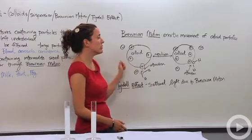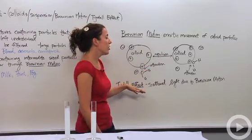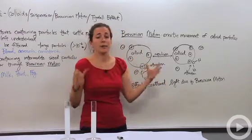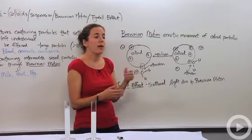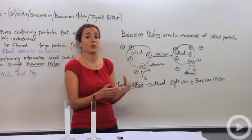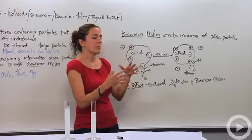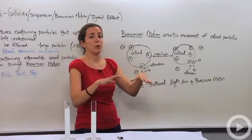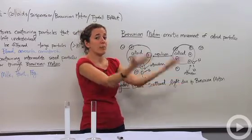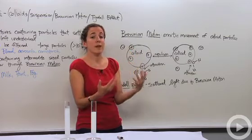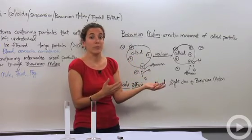The Tyndall effect is if you shine light through a colloid, you're going to get a scattering of that light. For example, fog is a colloid. The reason you don't put your high beams on when driving through fog is because the Brownian motion of the colloidal particles within the fog will shine that light right back in your eyes and affect your driving negatively.